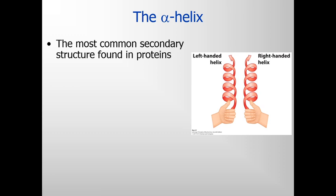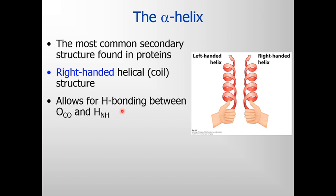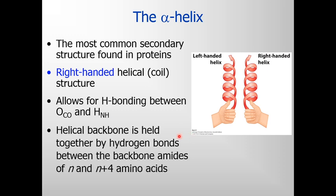The alpha helix is one of the most common secondary structures found in proteins, and there are two different kinds of helices. There is a left-handed helix — if you hold your left hand, the helix would take that form. The common one is a right-handed helix. This allows for hydrogen bonding between the oxygen of the carbonyl carbon and the hydrogen of NH. The helical backbone is held together by hydrogen bonds between the backbone amides of residue N and residue N+4.